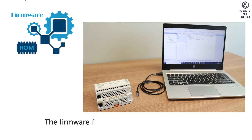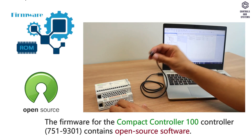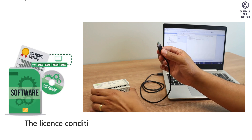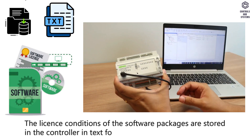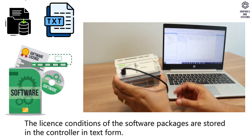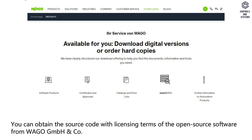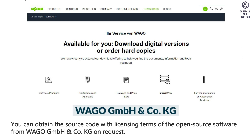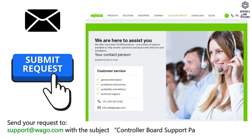Licensing: The firmware for the Compact Controller 100 contains open source software. The license conditions of the software packages are stored in the controller in text form. You can obtain the source code with licensing terms of the open source software from the WAGO website on request. Send your request to support@wago.com with the subject 'controller board support package'.